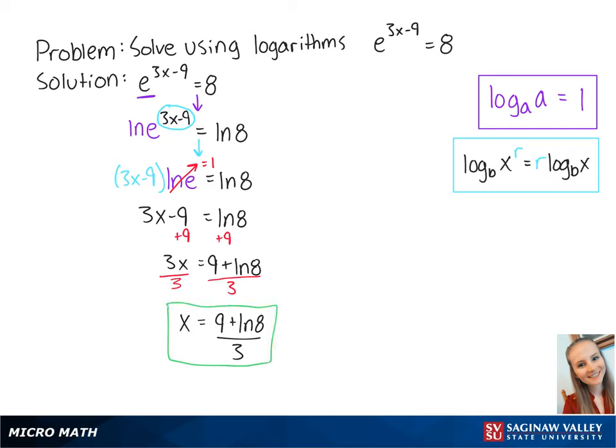However, we can simplify this further. The ln of 8 is equal to the ln of 2 to the 3rd power. So we can rewrite the equation as x equals 9 plus the ln of 2 to the 3rd power over 3. If we bring the exponent down,